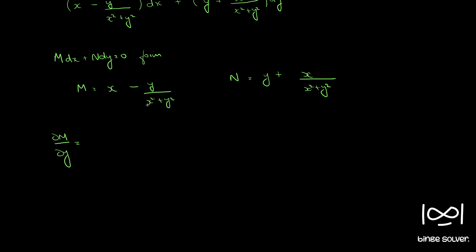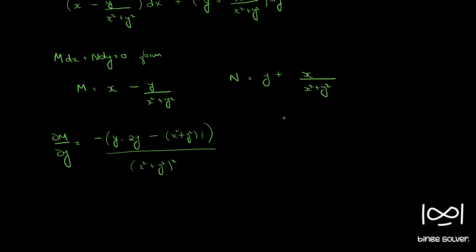To find ∂M/∂y, we need to differentiate M with respect to y. This is a u/v form, so we apply the quotient rule: first function (x minus y) times differential of second, which gives 2y, minus (x squared plus y squared) times the differential of first, all over the whole square.